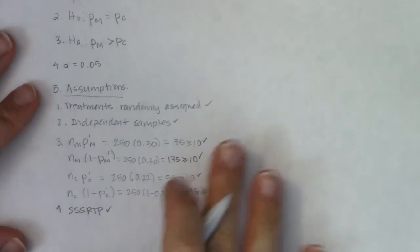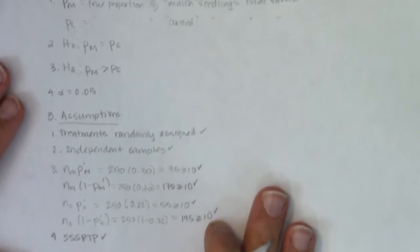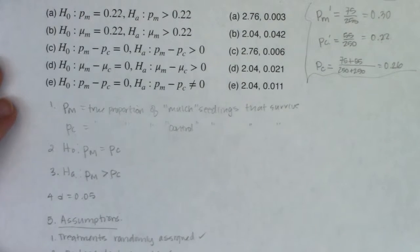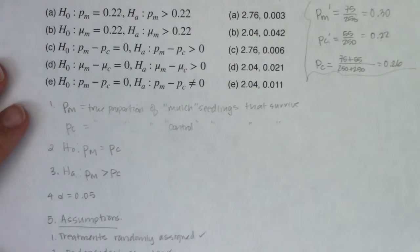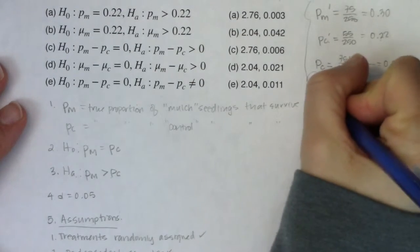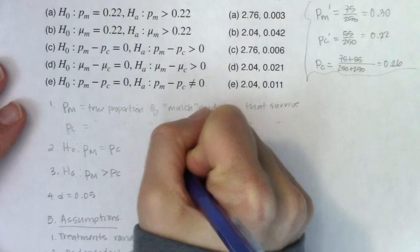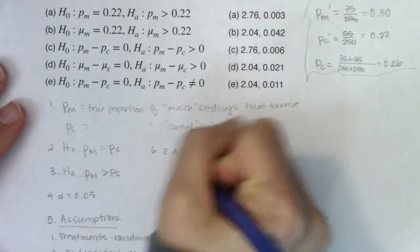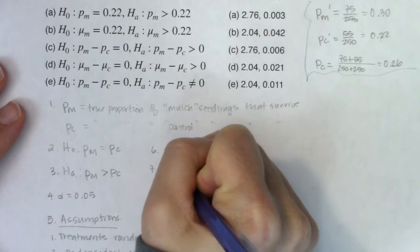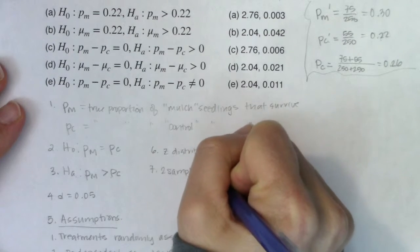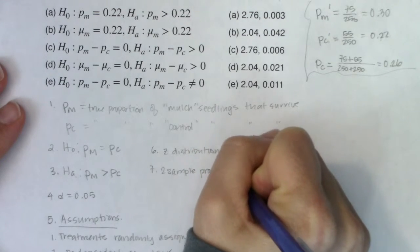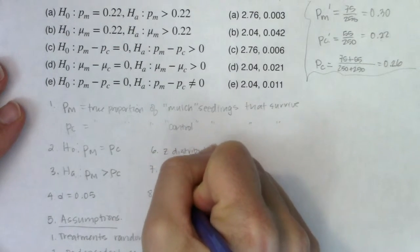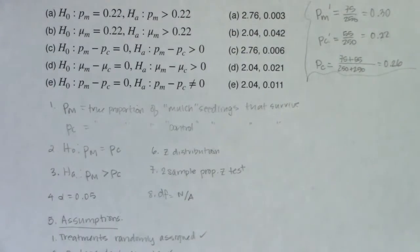Now I'll start filling in some of this empty space with work. Step six: state the name of the distribution — I've got the Z distribution. Step seven: state the name of the test — I have a two-sample proportion z-test. For degrees of freedom, they're not applicable in proportion land.